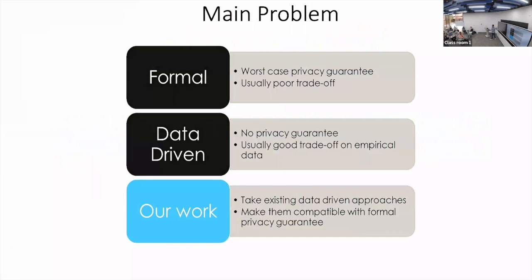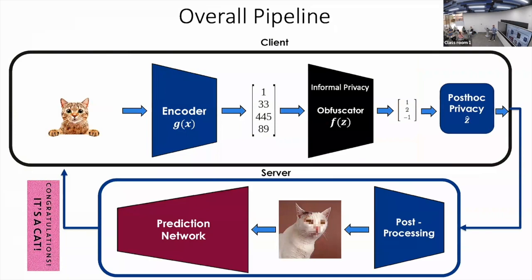With formal privacy mechanisms you get worst-case privacy guarantees, though there is usually a poor utility trade-off. The data-driven approach — applied ML models — has informal privacy: not quite a guarantee, but evidence that there is some informal privacy. Our work tries to bridge these two. There are hundreds of papers in this kind of setup with an encoder learning some embedding or representation of the data, with some informal privacy treating these representations, and that's where we plug in our post-hoc privacy framework.